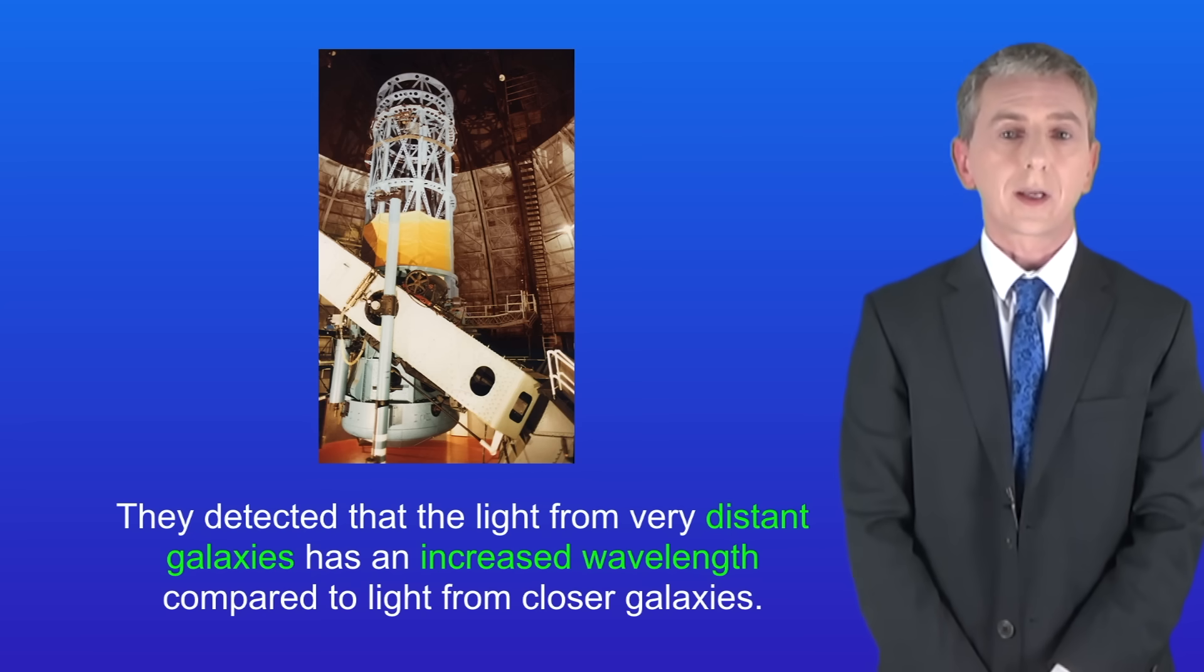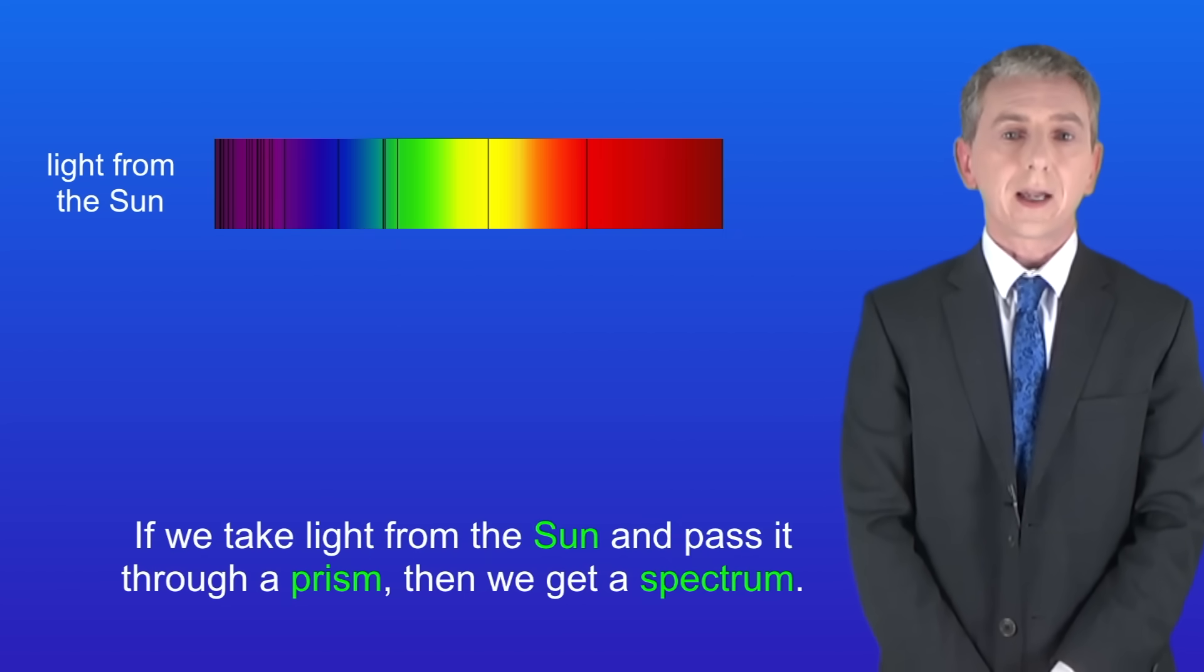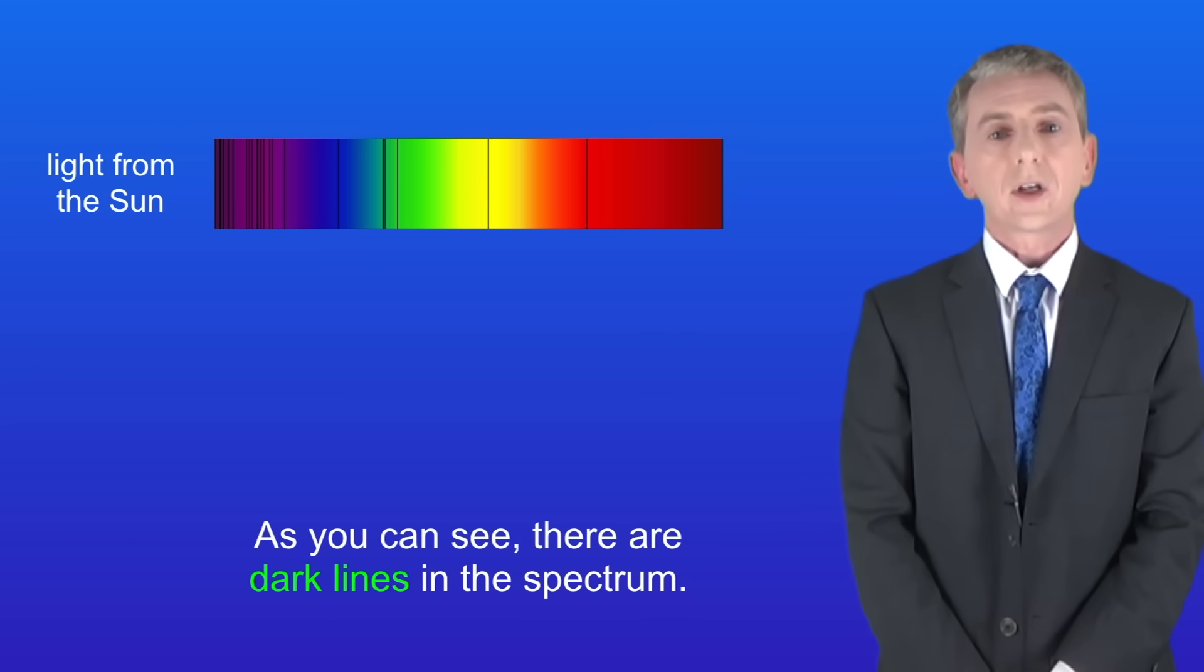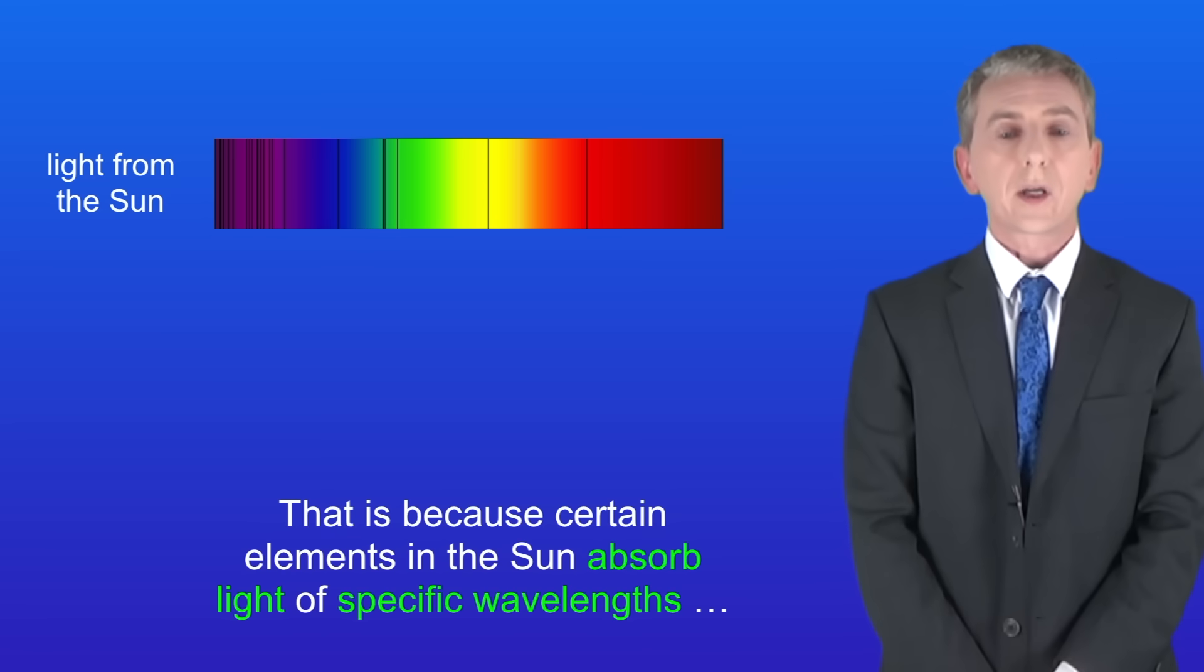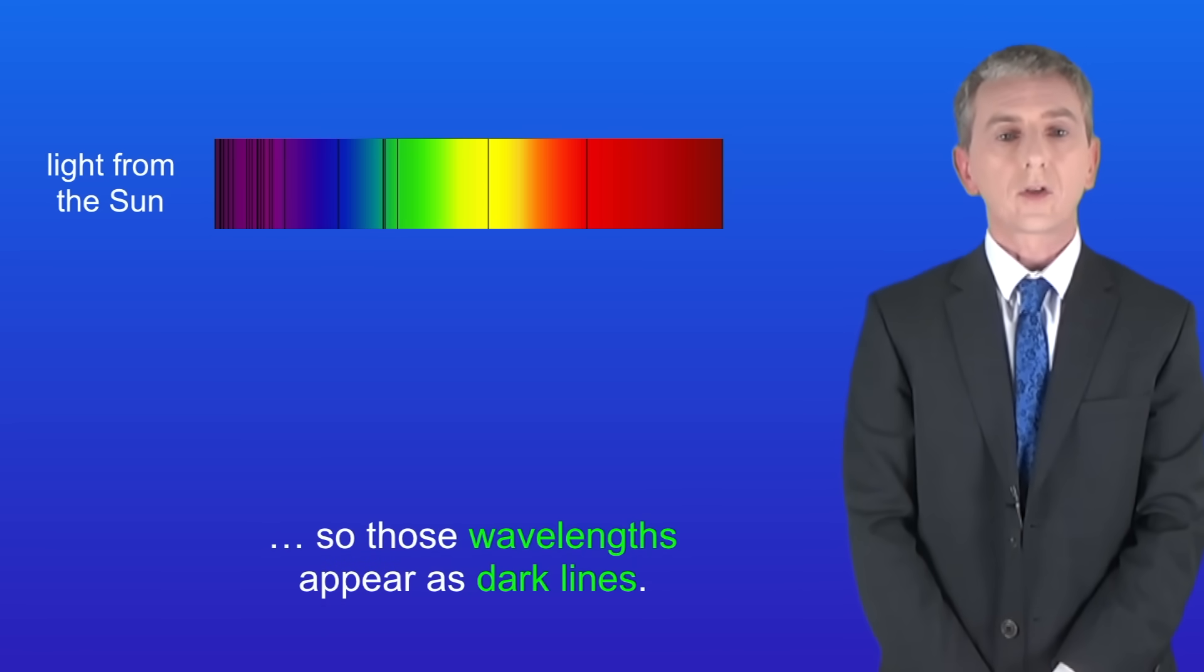Now that sounds tricky so I'm going to show you an example. If we take light from the Sun and pass it through a prism then we get a spectrum and I'm showing you that here. As you can see there are dark lines in the spectrum. That's because certain elements in the Sun absorb light of specific wavelengths, so those wavelengths appear as dark lines.